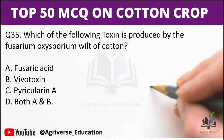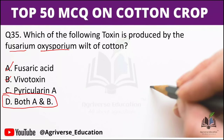Next question: Which toxin is produced by Fusarium oxysporum in case of cotton wilt? Options are: A) fusaric acid, B) vivotoxin, C) pyriculorin, D) both A and B. The right answer is option D, both A and B — Fusarium oxysporum produces fusaric acid as well as vivotoxin in case of cotton wilt.